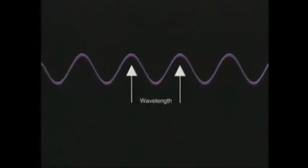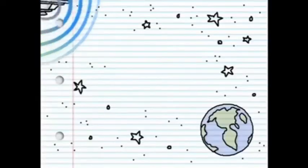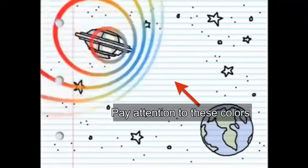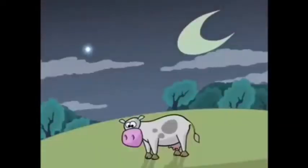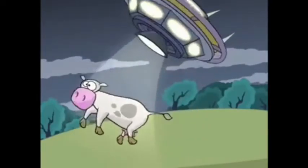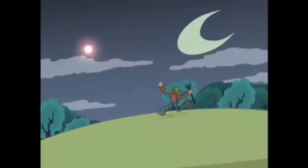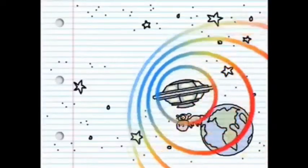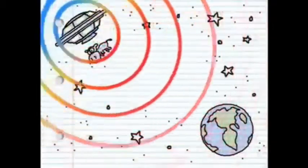Blue light has shorter wavelengths than red light. When an object in space moves towards us, its light waves are compressed into higher frequencies or shorter wavelengths, and hence we say that the light is blue shifted. When an object moves away from us, its light waves are stretched into lower frequencies or longer wavelengths, and we say that the light is redshifted.